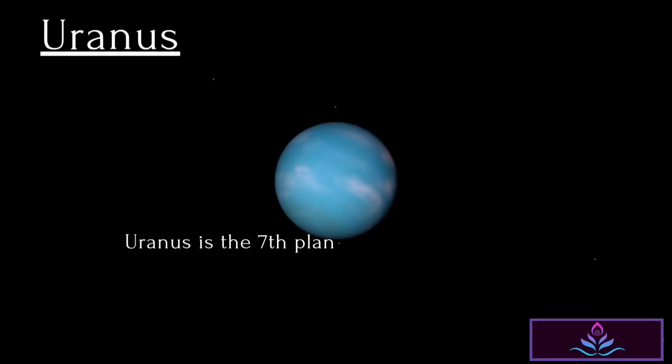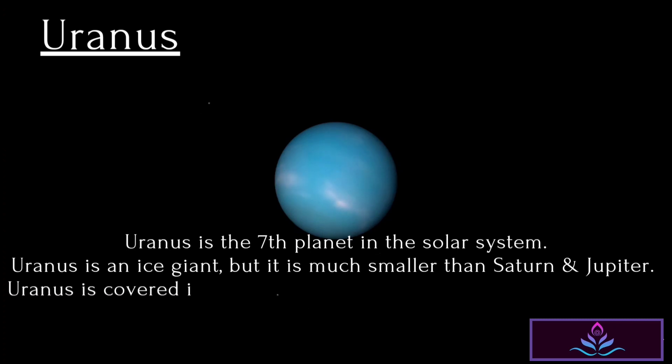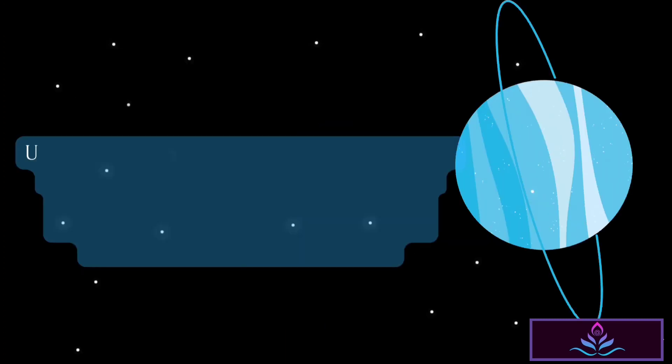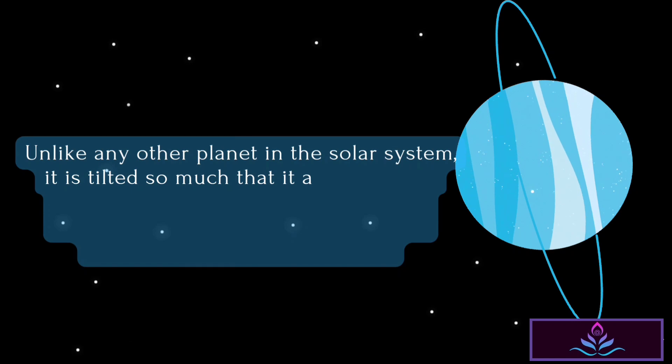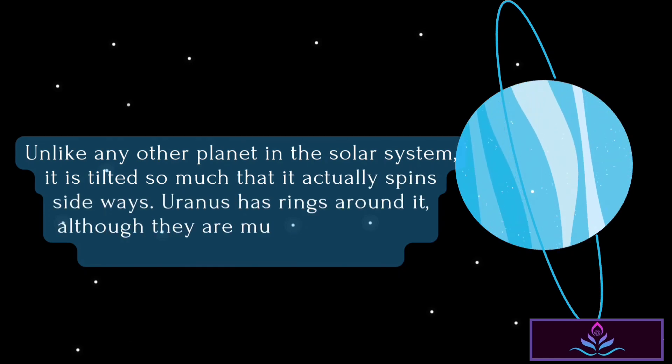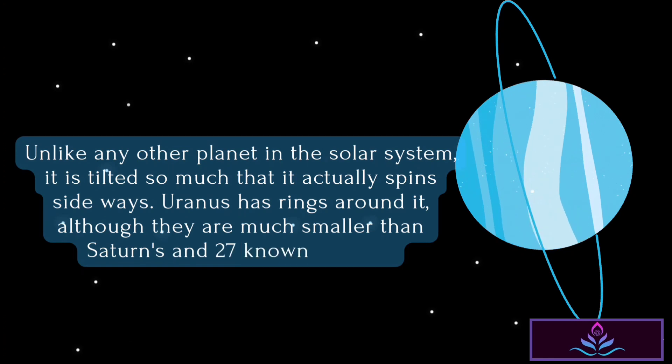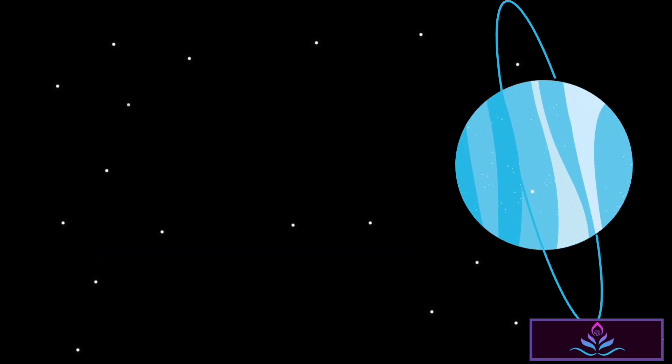Uranus is the seventh planet in the solar system. Uranus is an ice giant, but it is much smaller than Saturn and Jupiter. Uranus is covered in blue clouds made of methane, which gives it its lovely blue color. Unlike any other planet in the solar system, it is tilted so much that it actually spins sideways. Uranus has rings around it, although they are much smaller than Saturn's, and 27 moons.